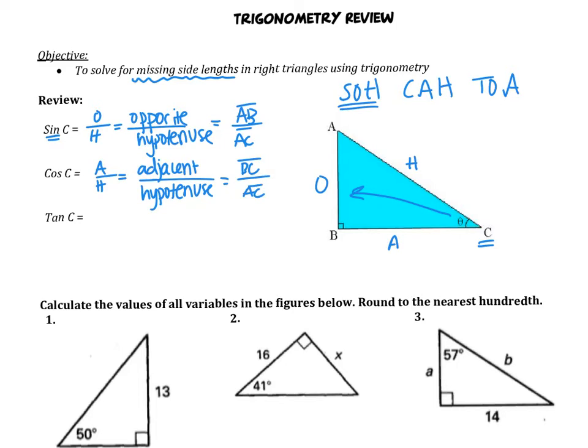And lastly, tangent. If we look at our acronym at the top, is O over A. So opposite over adjacent. Opposite again is AB, and adjacent is BC. So what we'll be doing with this today is finding missing side lengths on various right triangles.